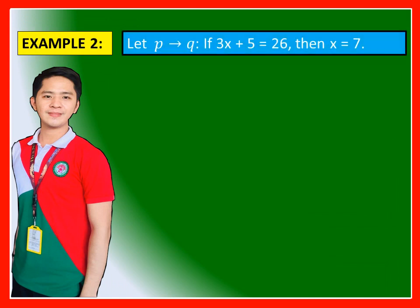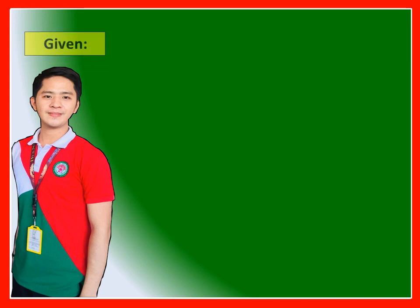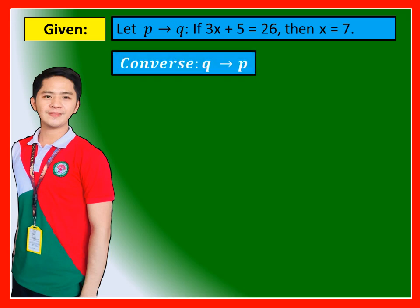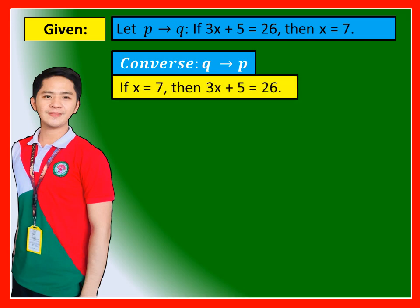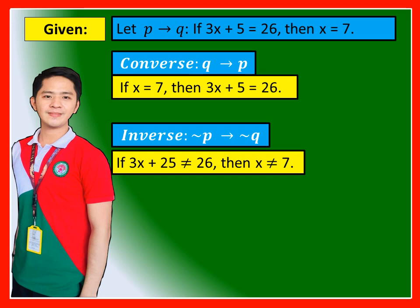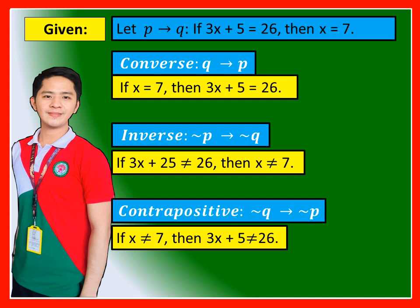Example 2: Let P then Q be: 'If 3x + 5 = 26, then x = 7.' The converse (Q then P): 'If x = 7, then 3x + 5 = 26.' The inverse (not P then not Q): 'If 3x + 5 ≠ 26, then x ≠ 7.' The contrapositive (not Q then not P): 'If x ≠ 7, then 3x + 5 ≠ 26.'